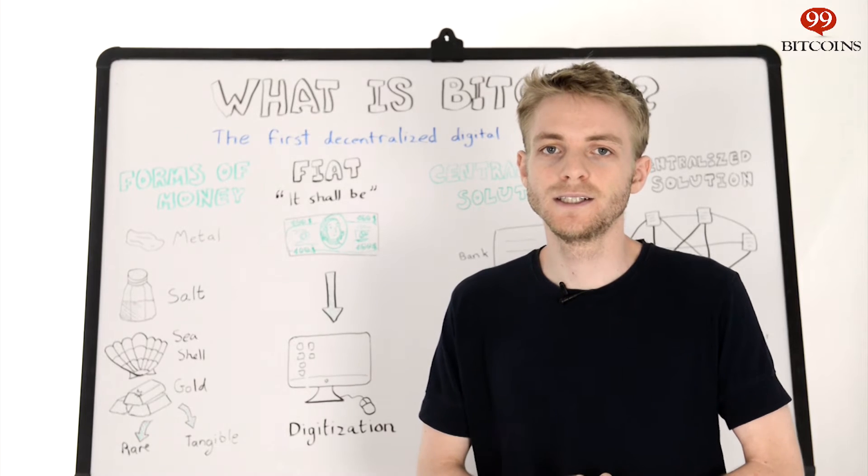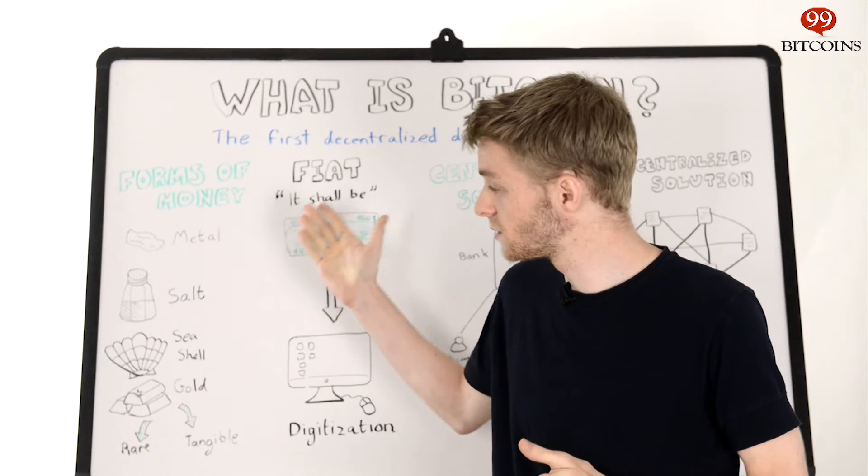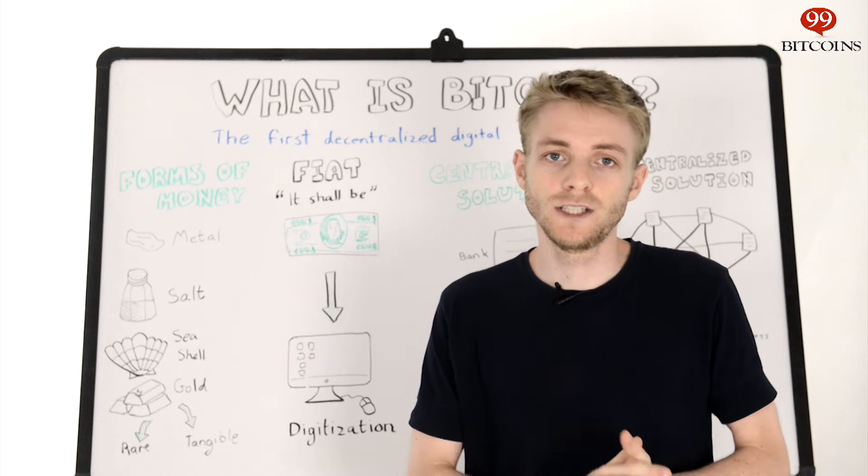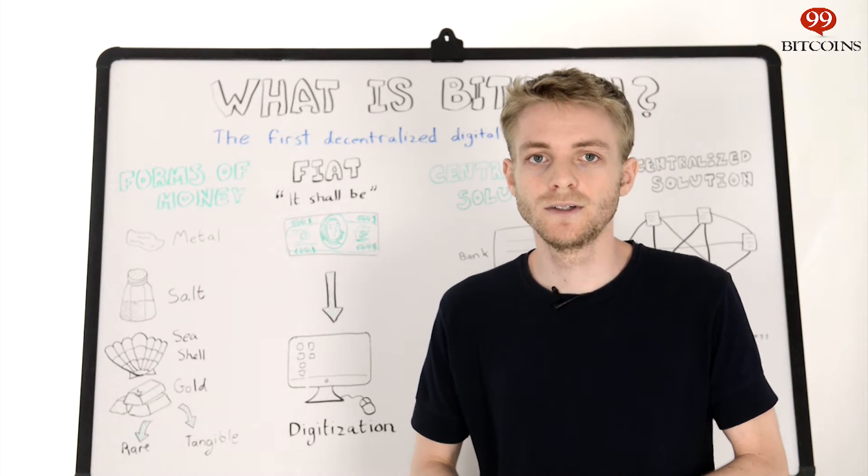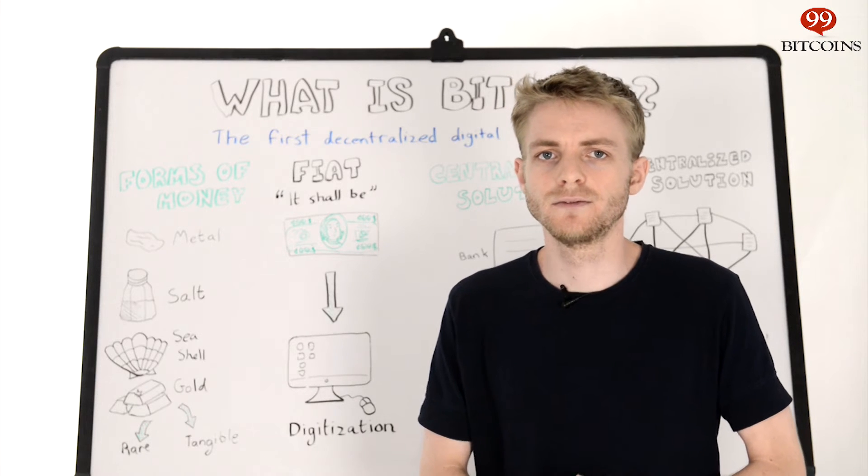Well, money ultimately is simply the tool that we use to exchange value. Throughout history we've used lots of things as money, from seashells to precious metals and salt. The most popular money historically has been gold, and there's good reason for this.